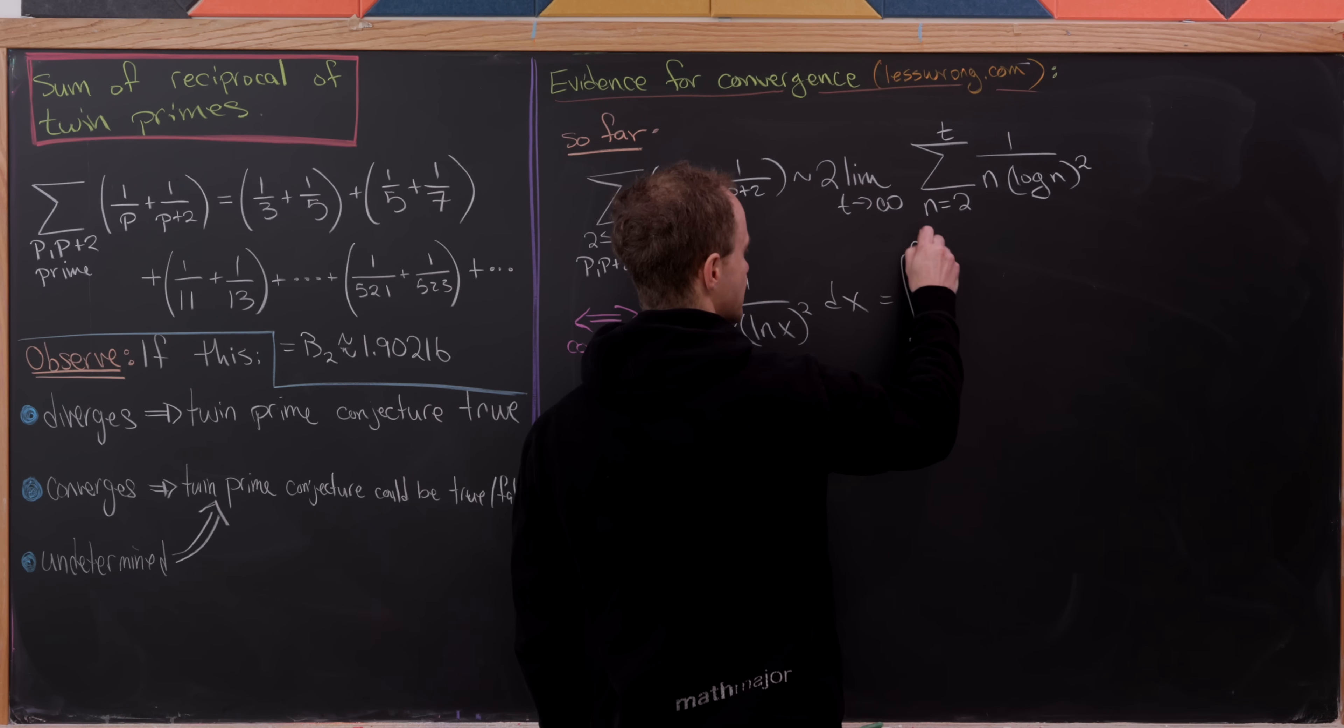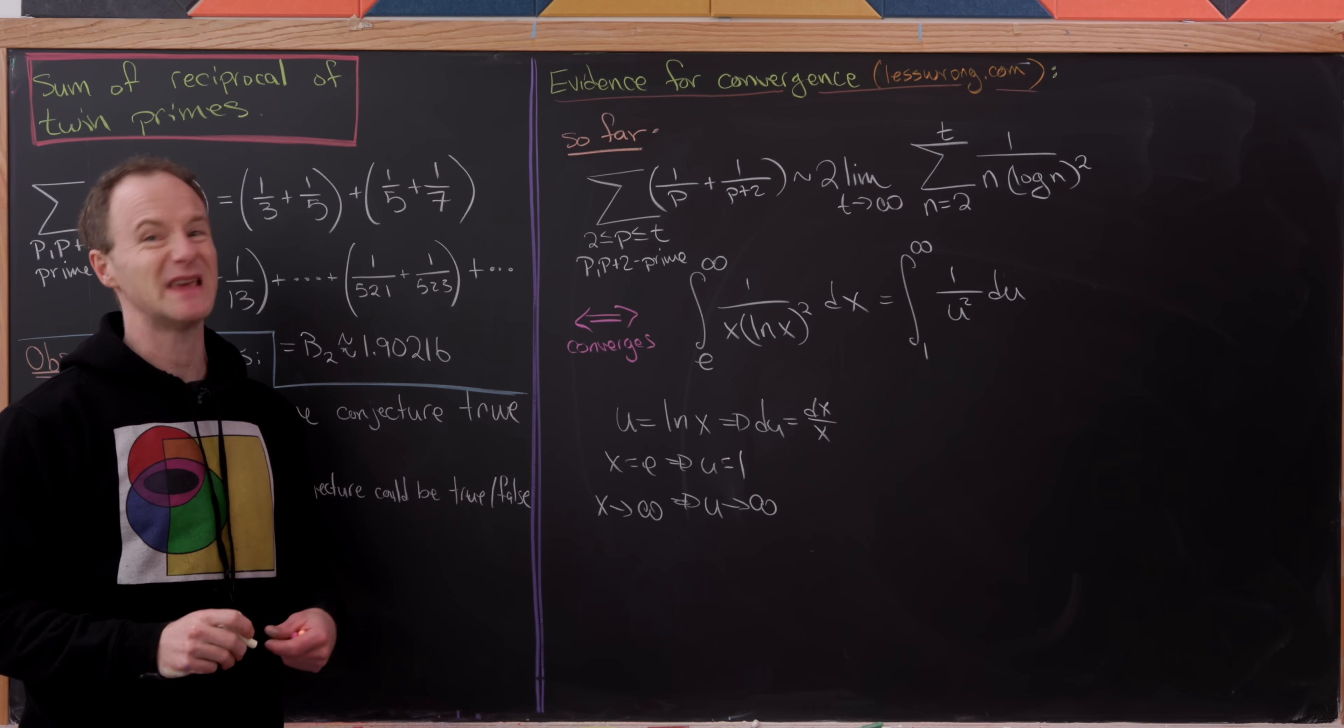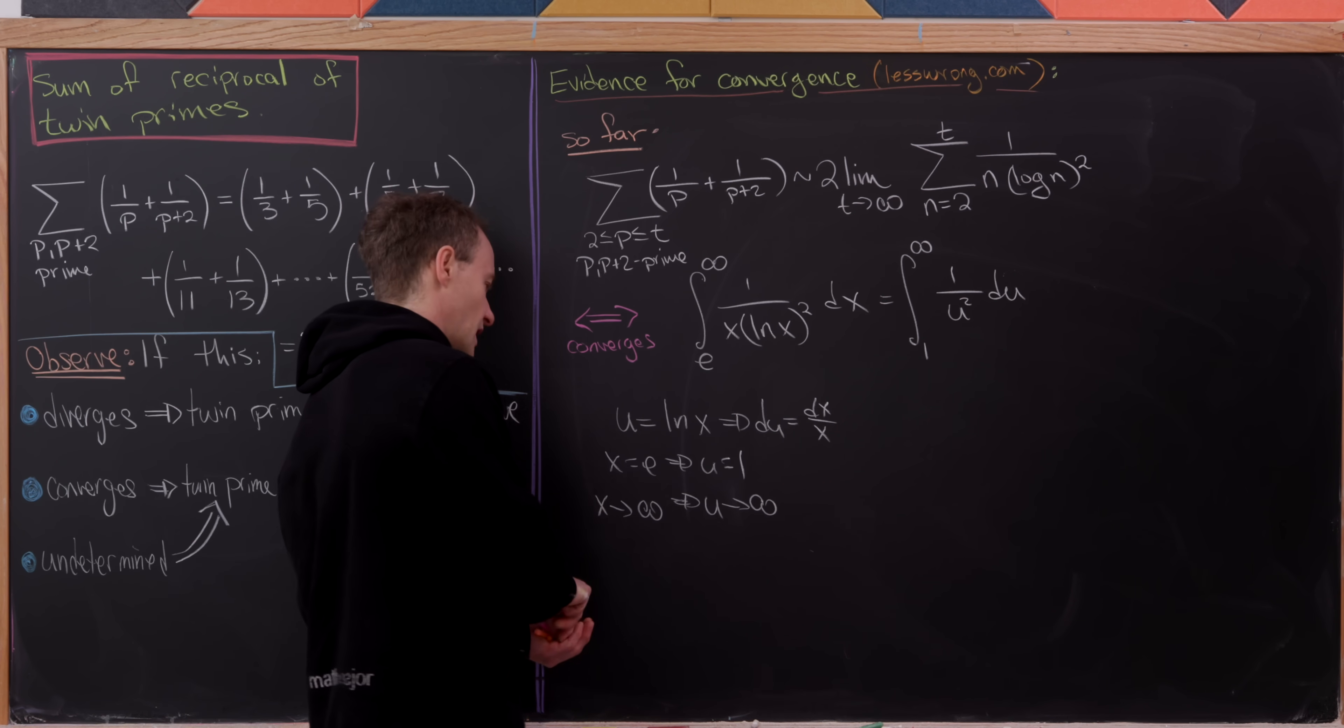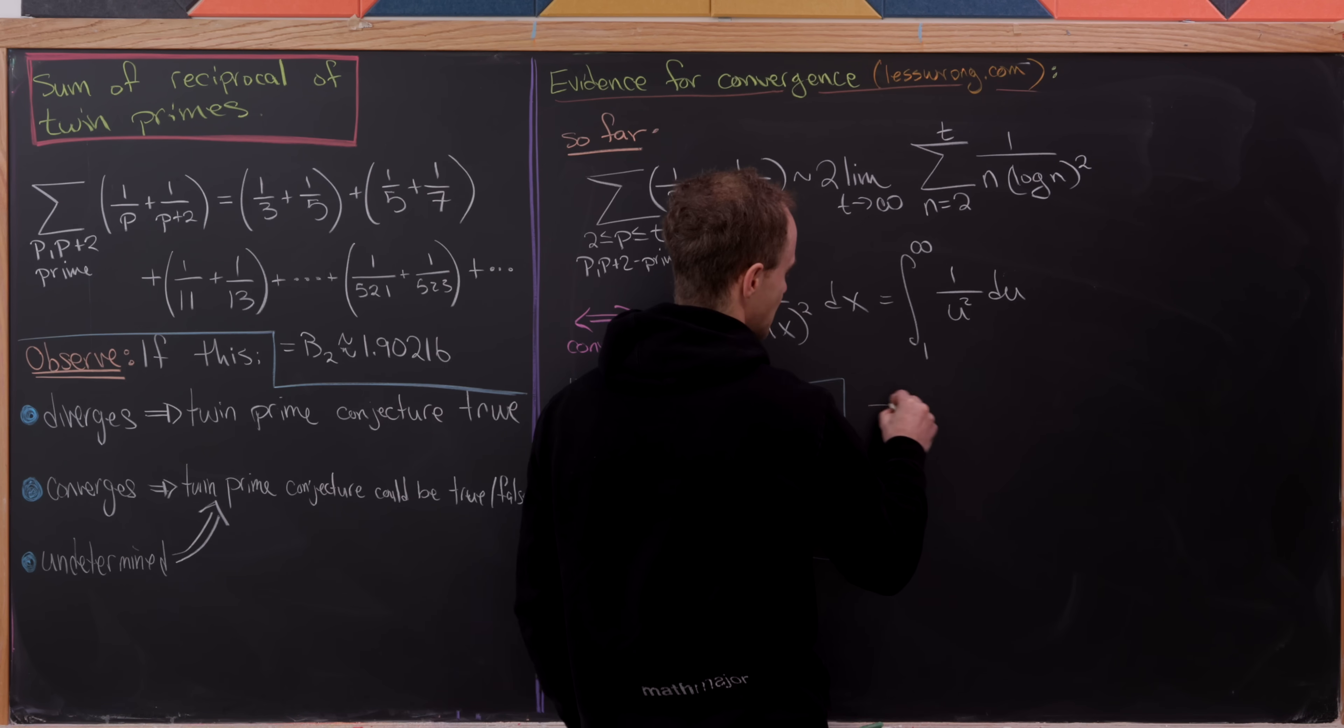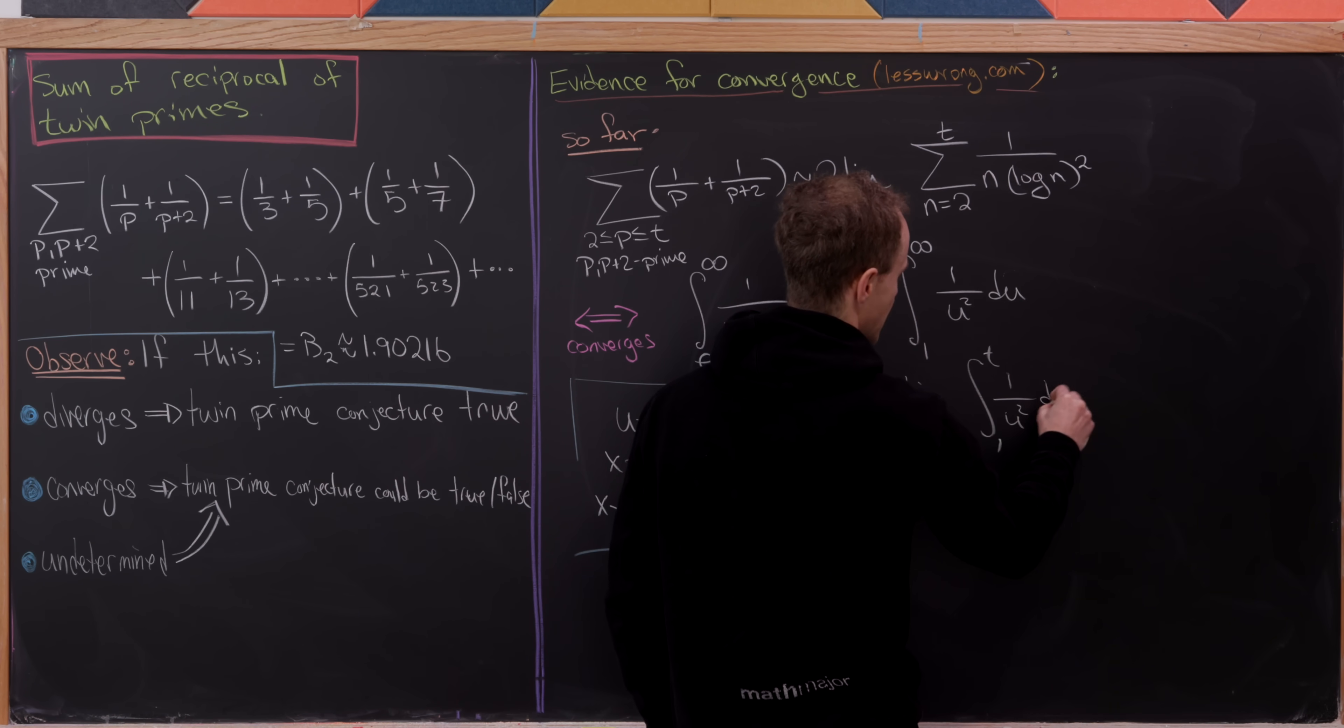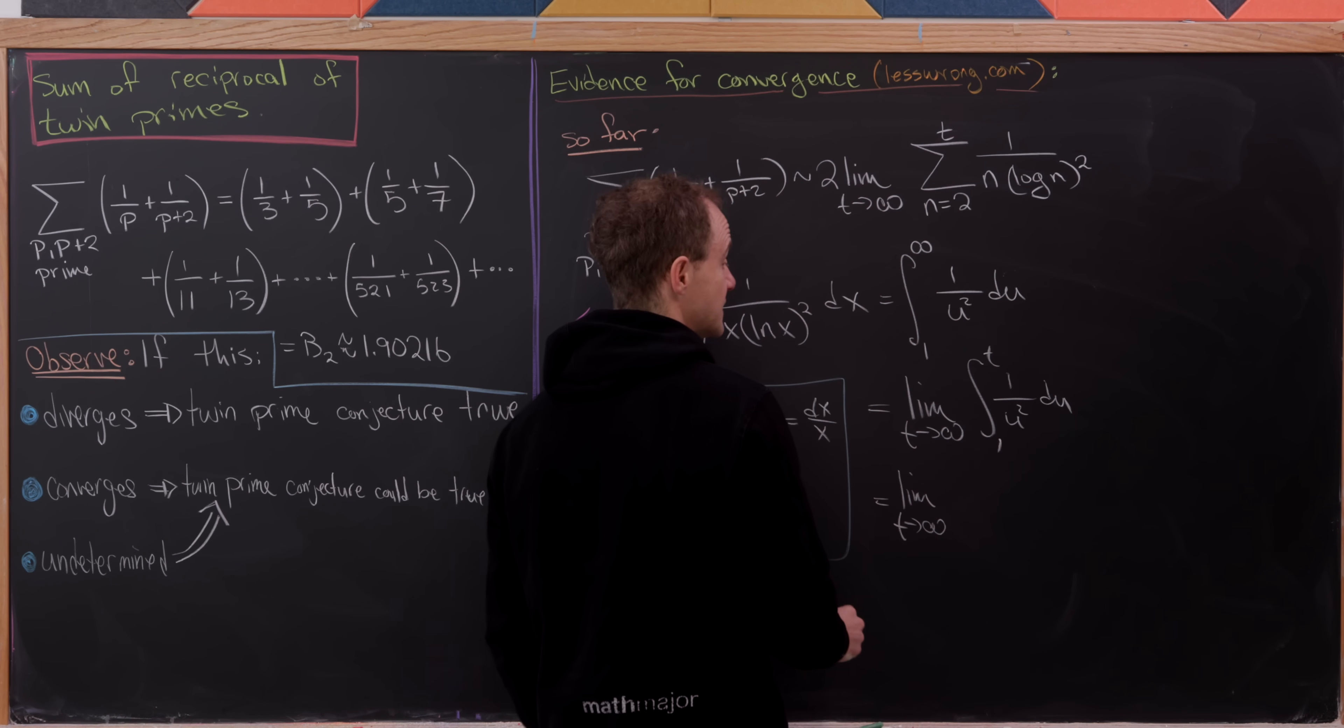So that's going to change this whole thing into the integral from 1 up to infinity of 1 over u squared du. But then you might know the p series test for integrals like this and you know that this converges. But we can in fact finish it off from scratch without explicitly knowing that test.